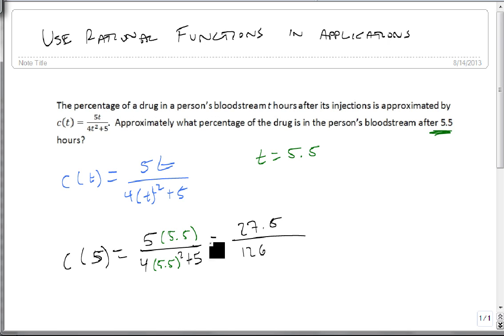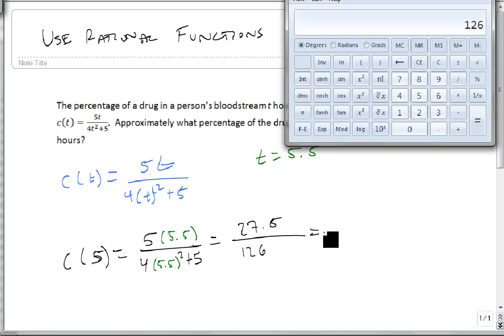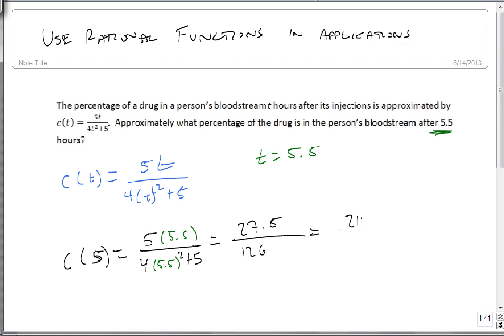Alright, now we can divide. 27.5 divided by 126 is 0.21825 which is 21.83%. So 5.5 hours after being given the drug there's only 21.83% percentage in the bloodstream.